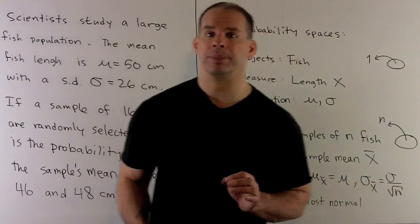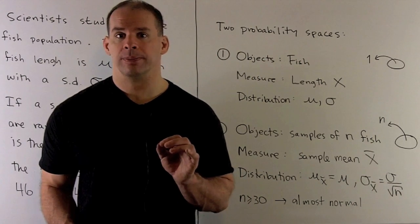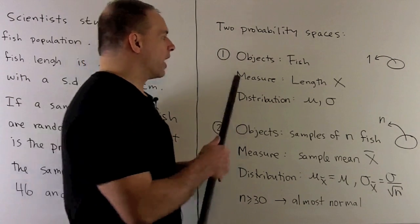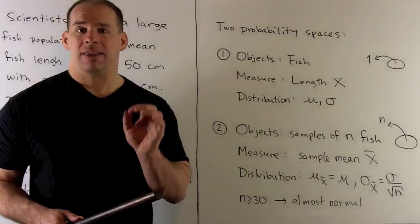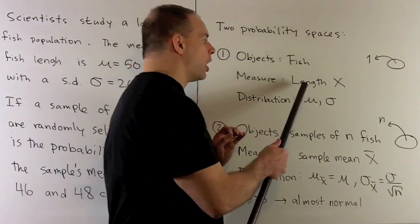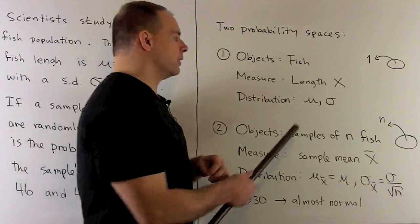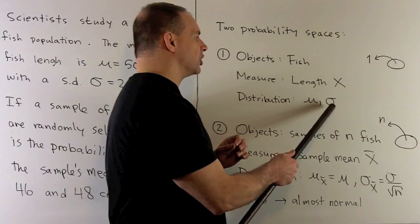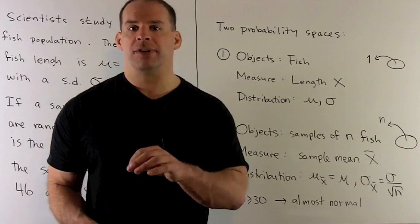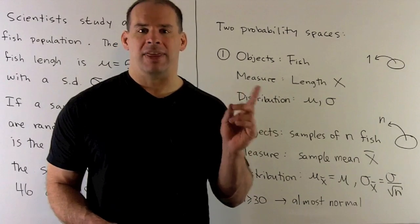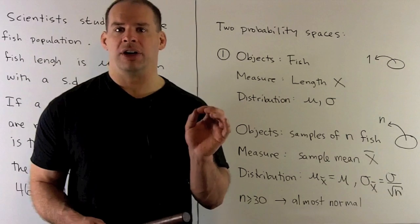Let's recall what we're trying to do here. We're going to have two probability distributions. In the first case, we have our population of fish. The quantity that we're measuring is going to be length. That gives us a random variable, which we'll call x. Attached to x is a probability distribution with a mean and a standard deviation. The process here is you have your population of fish, you draw one fish randomly, and this probability distribution tells you information about the likelihood of that fish's length.